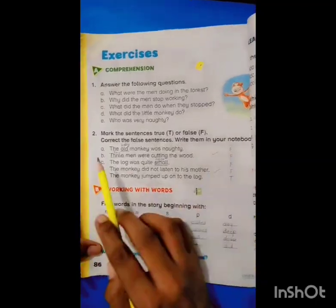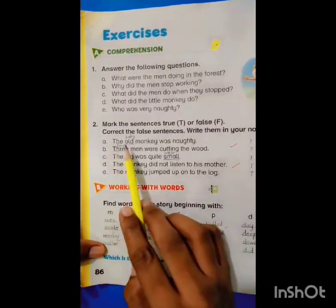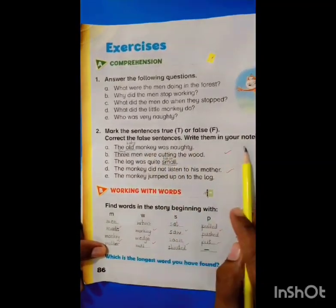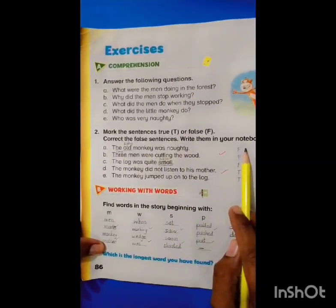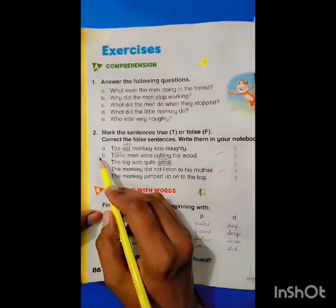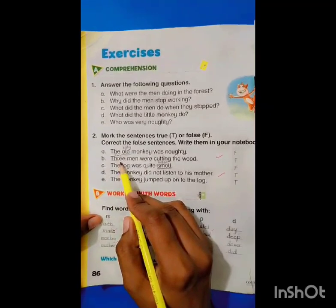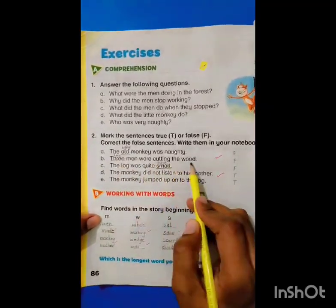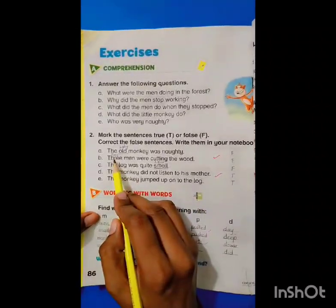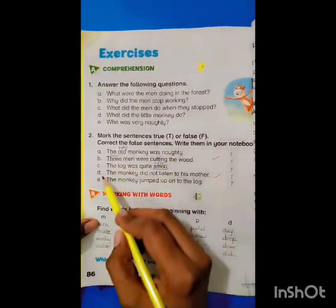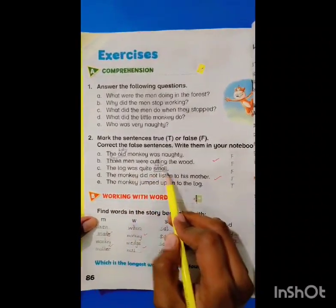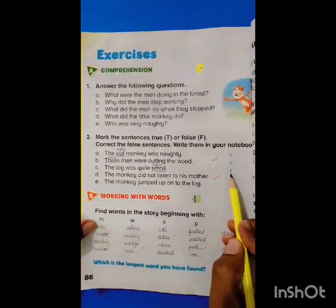Let's start. First sentence: 'The old monkey was nutty.' It's a false statement. The right word is baby monkey. The second one: 'Three men were cutting the wood.' It's a false statement — there were two men. Next: 'The log was quite small.' It's a false statement.